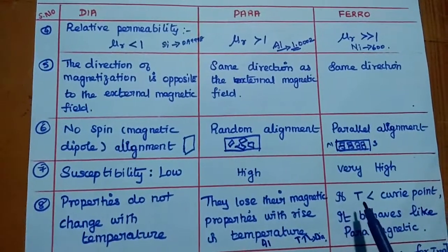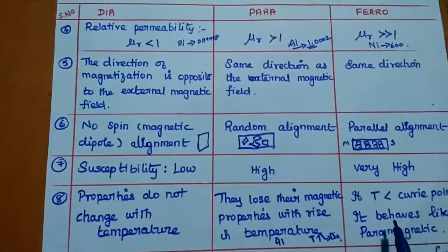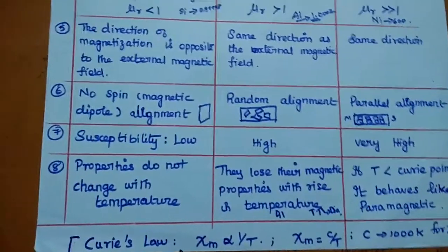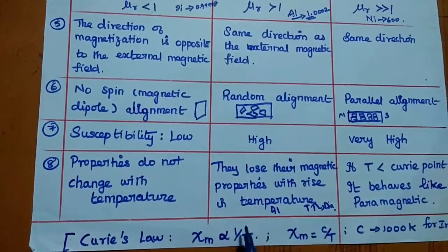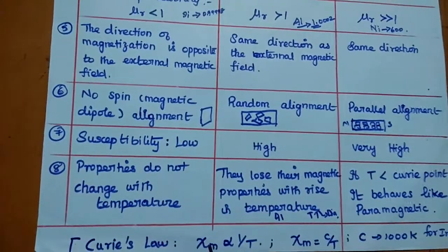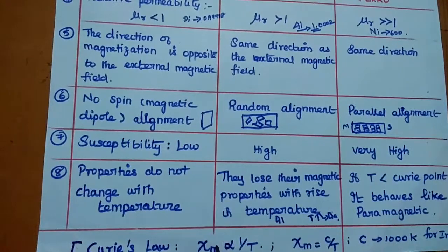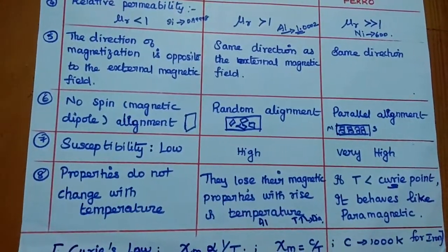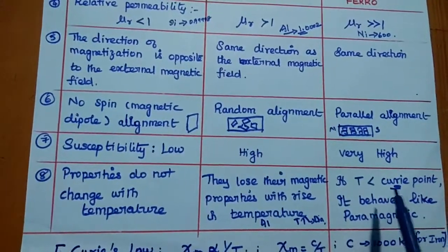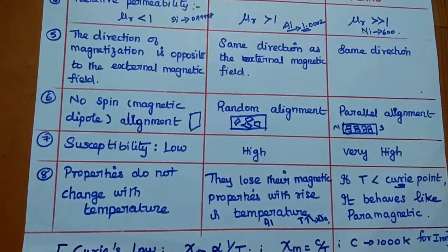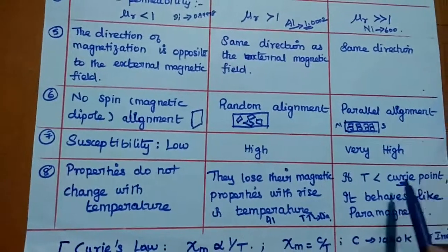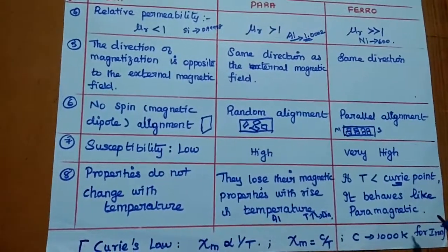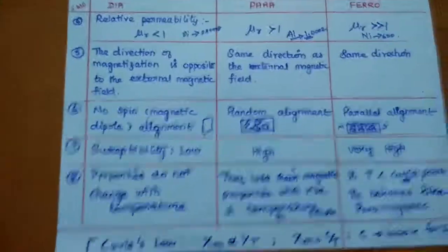For ferromagnetic materials, if the temperature decreases below the Curie point, they behave like paramagnetic materials. Curie's law states that susceptibility is inversely proportional to temperature — so if temperature increases, susceptibility decreases. The Curie point is the maximum temperature at which a material starts to change its magnetic behavior. If the temperature is less than the Curie point, the ferromagnetic material behaves like a paramagnetic material. These are the major classifications of magnetic materials.